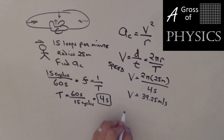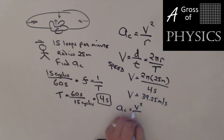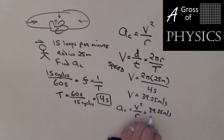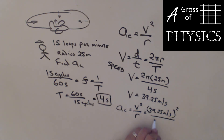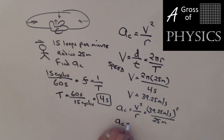We want centripetal acceleration, not just speed. So we compute v²/r: 39.25 meters per second squared, divided by 25 meters. Squaring 39.25 and dividing by 25 gives a centripetal acceleration of 61.6 meters per second squared.